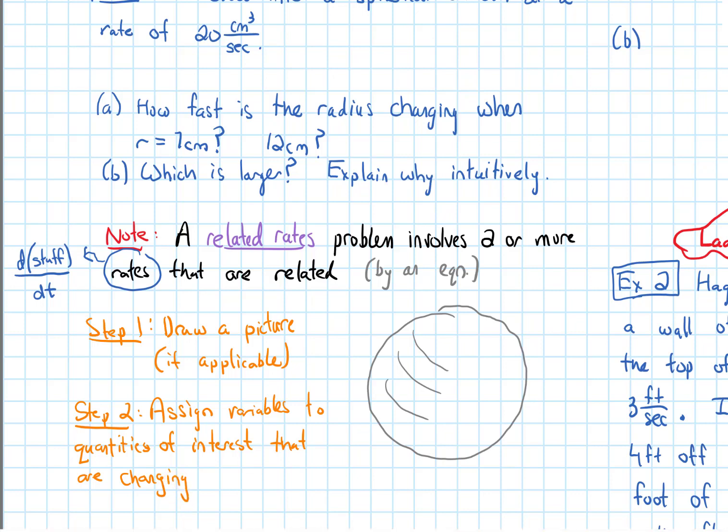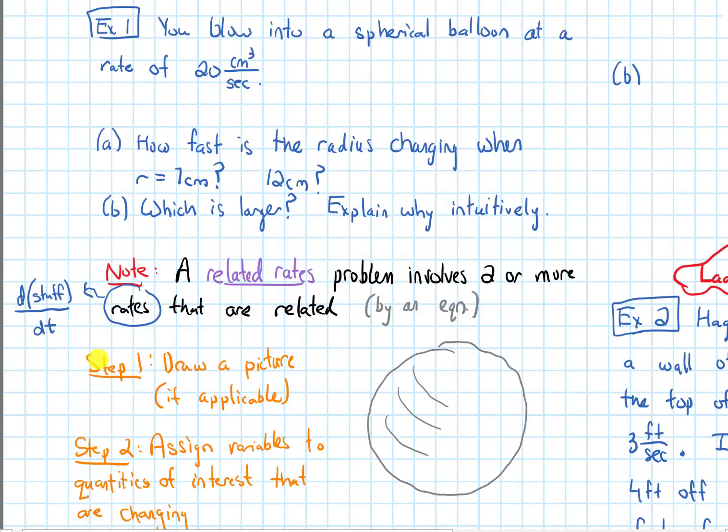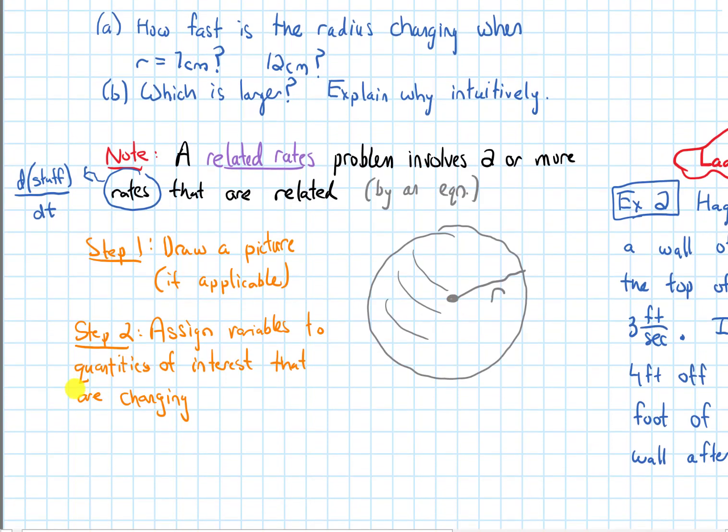In our picture, as we're blowing into this spherical balloon, the balloon's going to get larger. I could draw from the center to the edge the radius. The radius is going to be changing. Other things that might be changing are the volume of this balloon, the surface area of the balloon. But for right now, I'm just going to label the radius. The radius is definitely something that's changing.